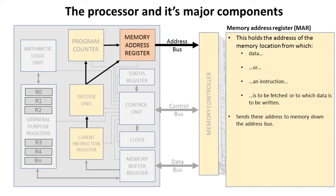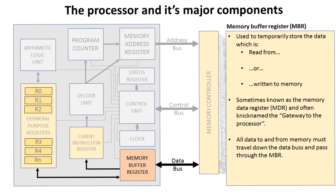The memory address register sends addresses to memory down the address bus. The memory buffer register is used to temporarily store data which is read from or written to memory. It is sometimes referred to as the memory data register and is often nicknamed the gateway to the processor, because all data to and from memory must travel down the data bus and pass through the memory buffer register before going further into the processor.